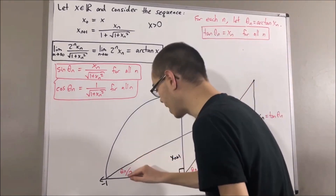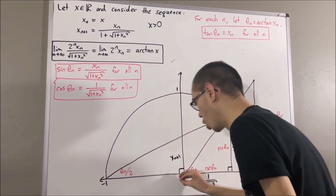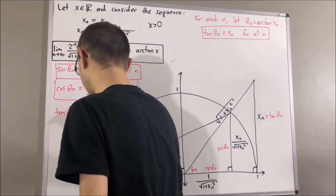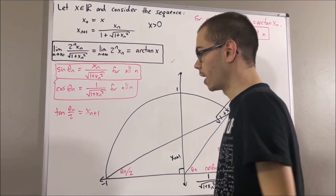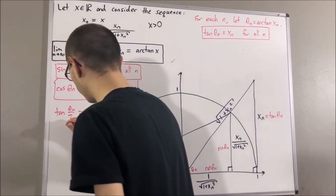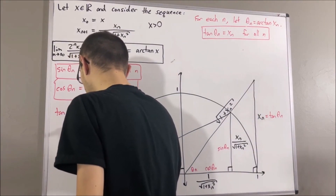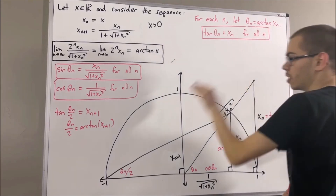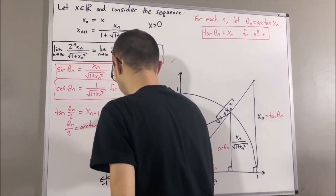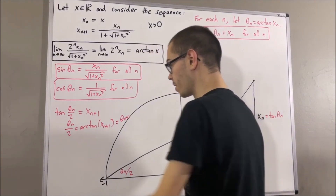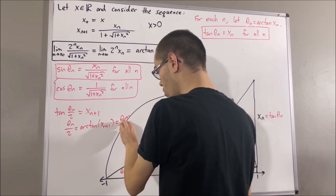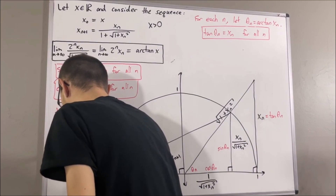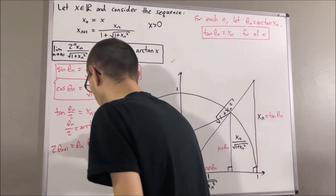From trigonometry, the tangent of θₙ over 2 equals xₙ₊₁ over 1, so tangent of θₙ/2 equals xₙ₊₁. Solving for θₙ/2, we get θₙ/2 equals the arctangent of xₙ₊₁. Based on how we defined each of the angles, arctangent of xₙ₊₁ equals θₙ₊₁. So θₙ/2 equals θₙ₊₁, and multiplying both sides by 2 gives 2θₙ₊₁ equals θₙ. Since n is arbitrary, this is true for all n.